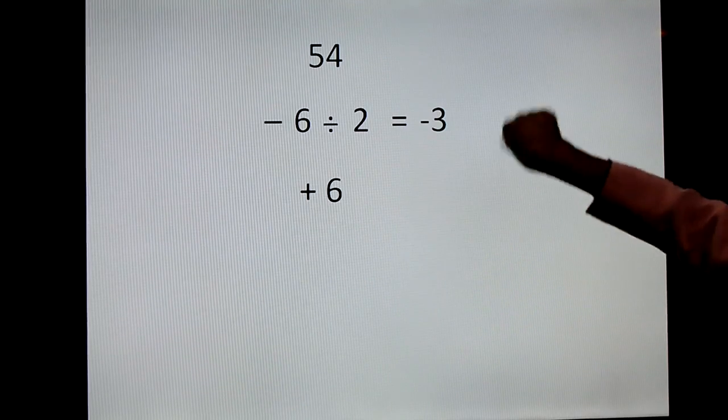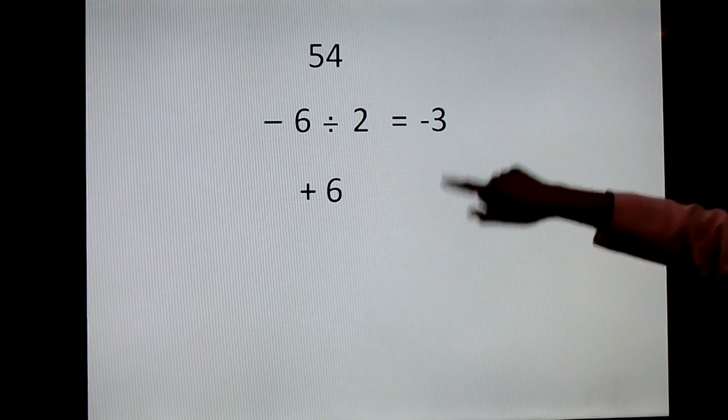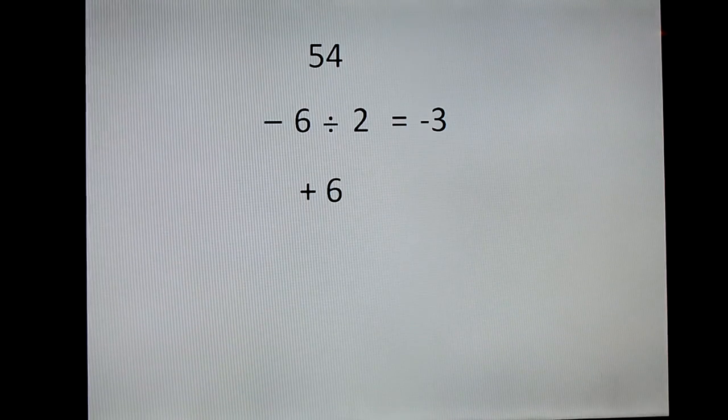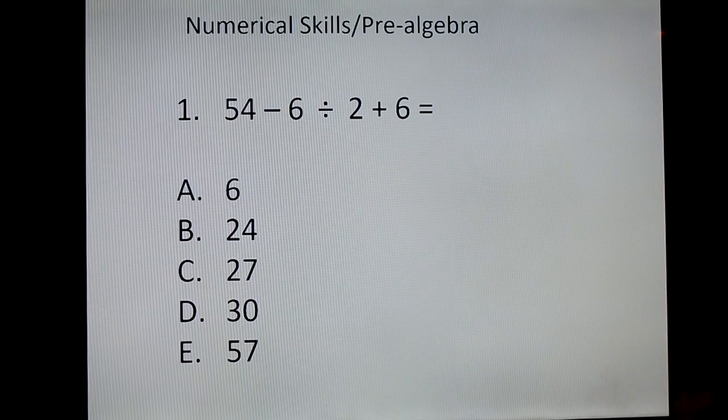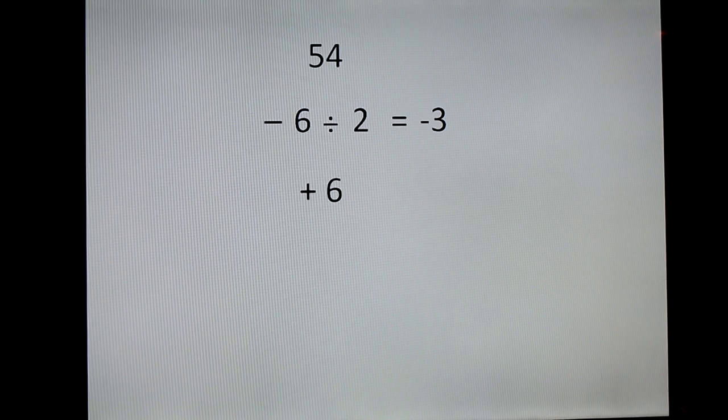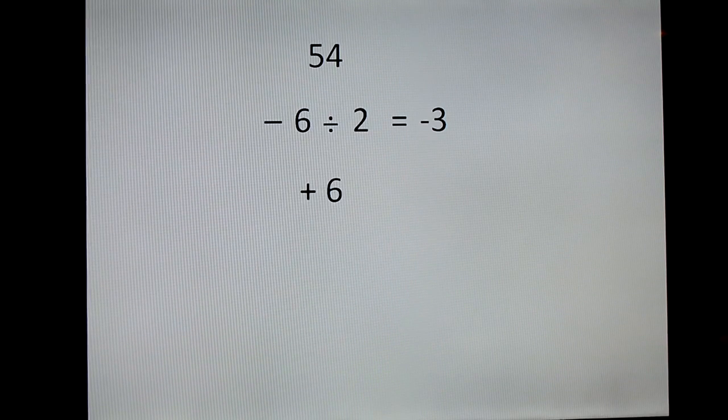54 negative 6 divided by 2 is going to give you a negative 3 and plus 6. So if I just added that up real quick: 54 minus 3 is 51, plus 6 is 57, and there's your answer.